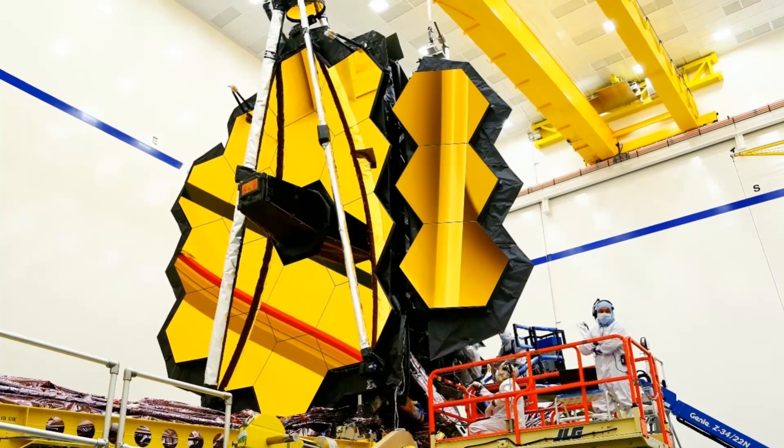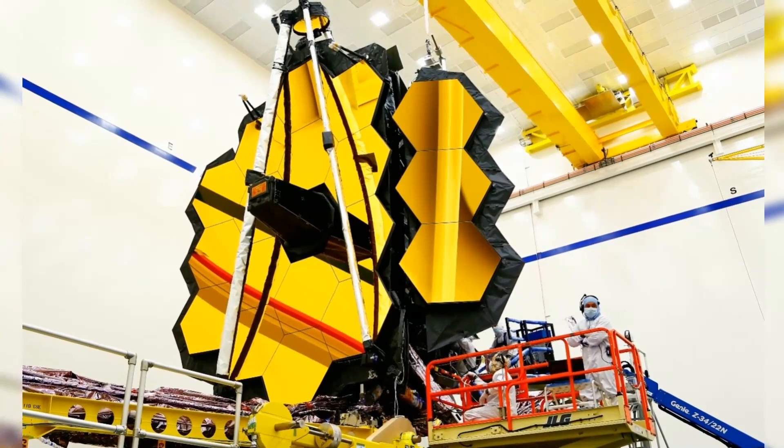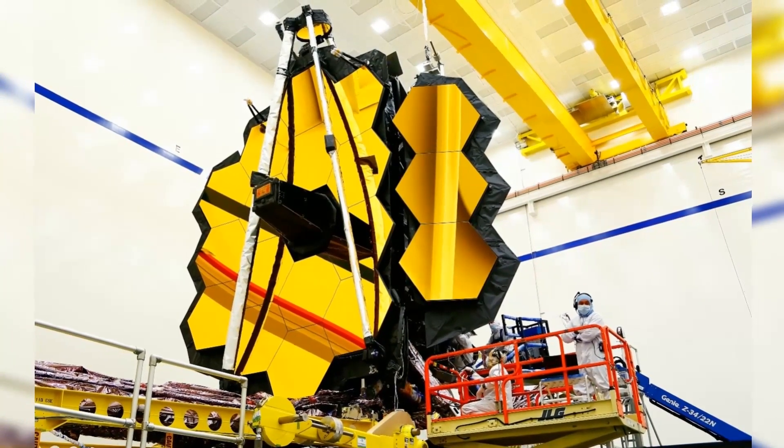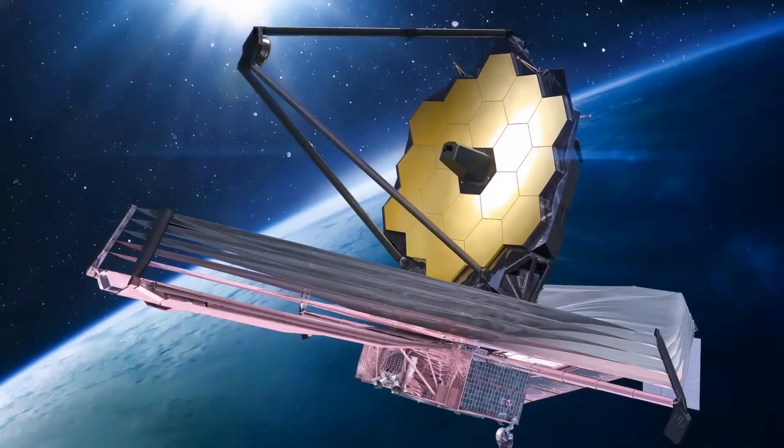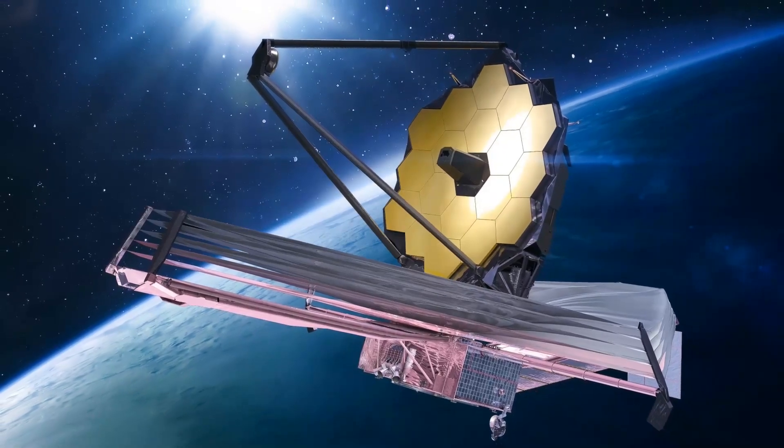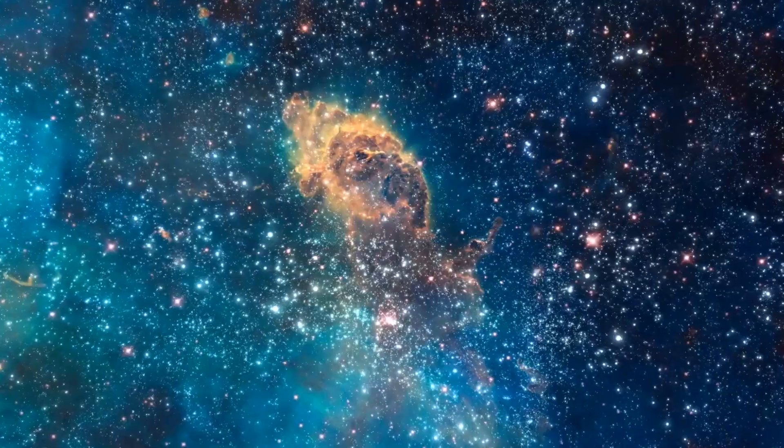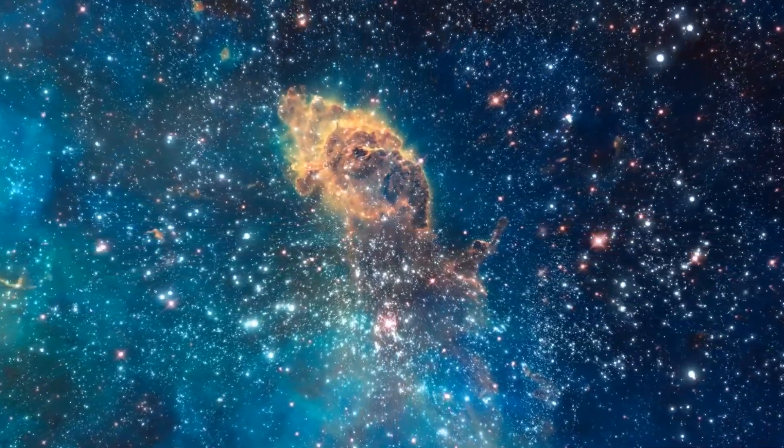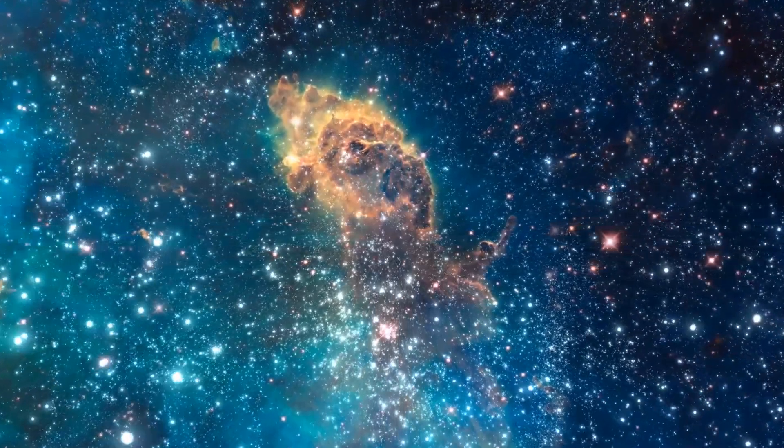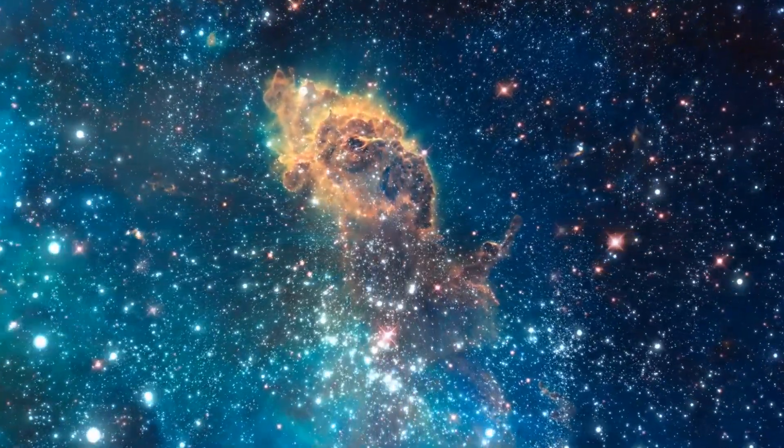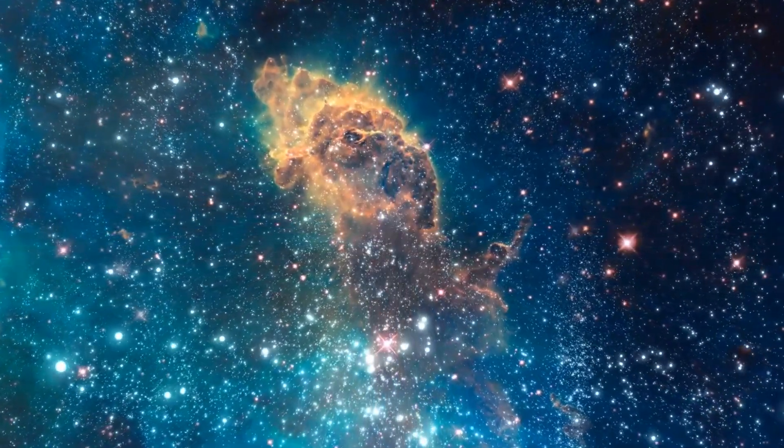The telescope is equipped with four science instruments that will enable observations in visible, near-infrared and mid-infrared wavelengths. The first of these is the Near Infrared Camera. This is the telescope's primary imager that will cover the infrared wavelength range of 0.6 to 5 microns. The NIR Cam will detect light from the nearest stars and galaxies in the process of formation, a population of stars in nearby galaxies, as well as young stars in the Milky Way and Kuiper Belt objects.